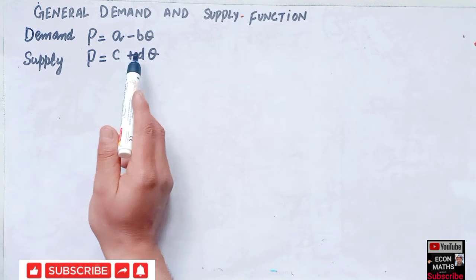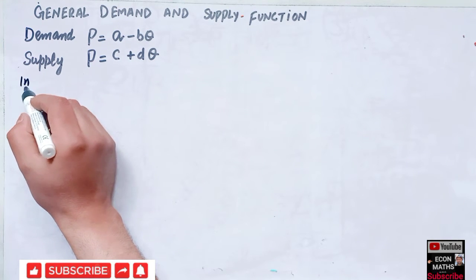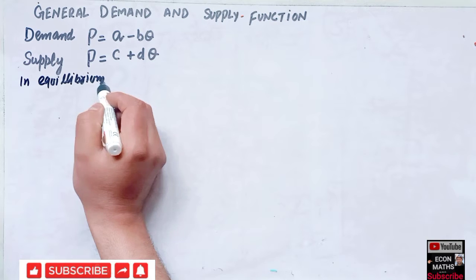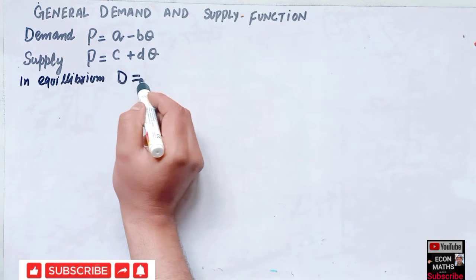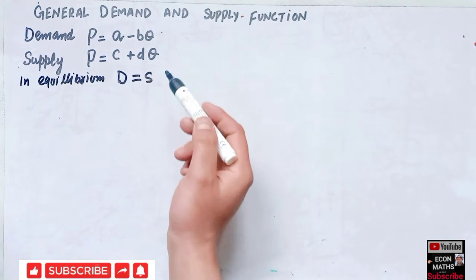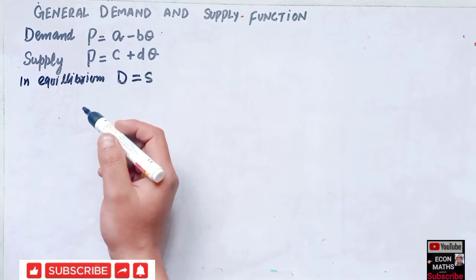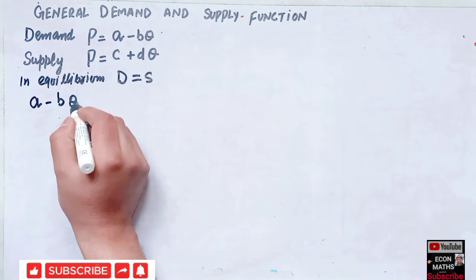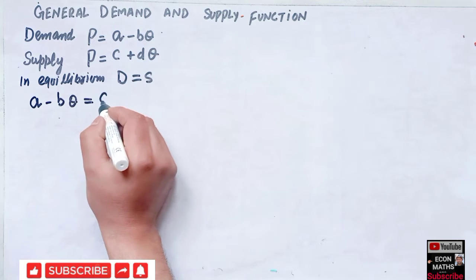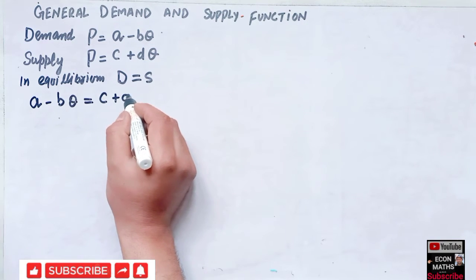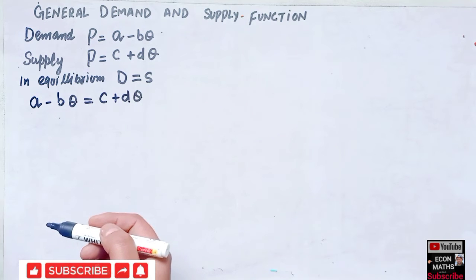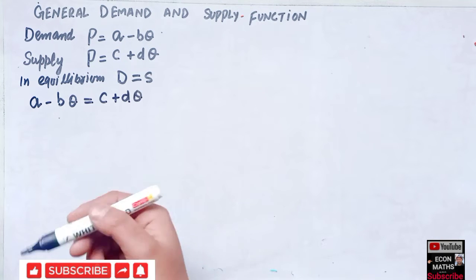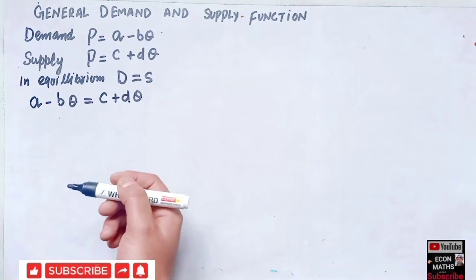As we know, for equilibrium to be established, demand should be equal to supply. So in equilibrium we equate the two functions: a - BQ = C + DQ. You can calculate the equilibrium price and quantity in a very short span of time using this method.